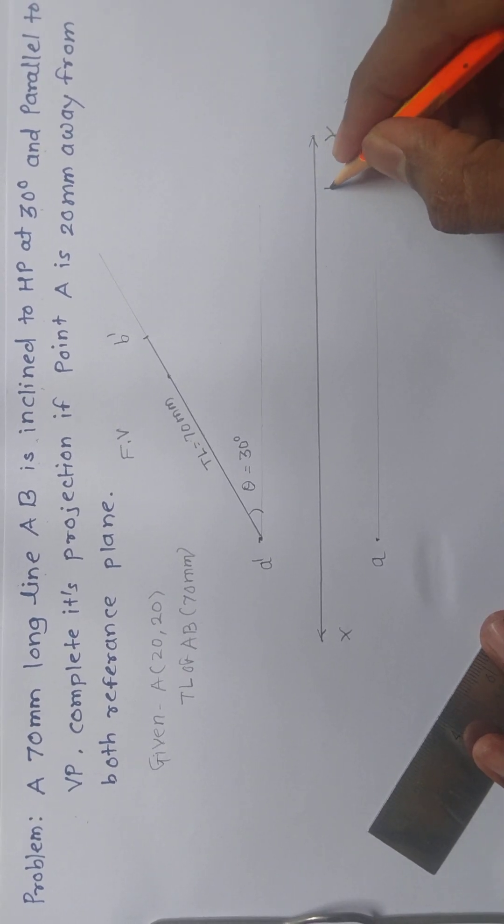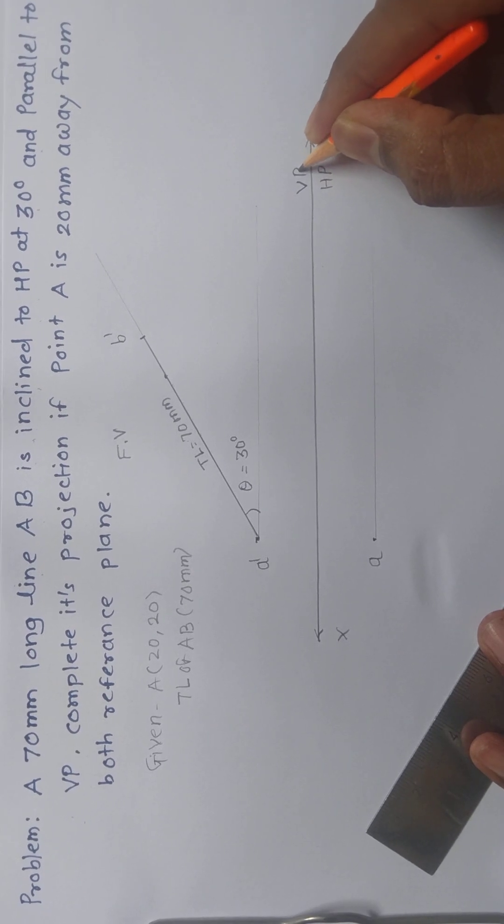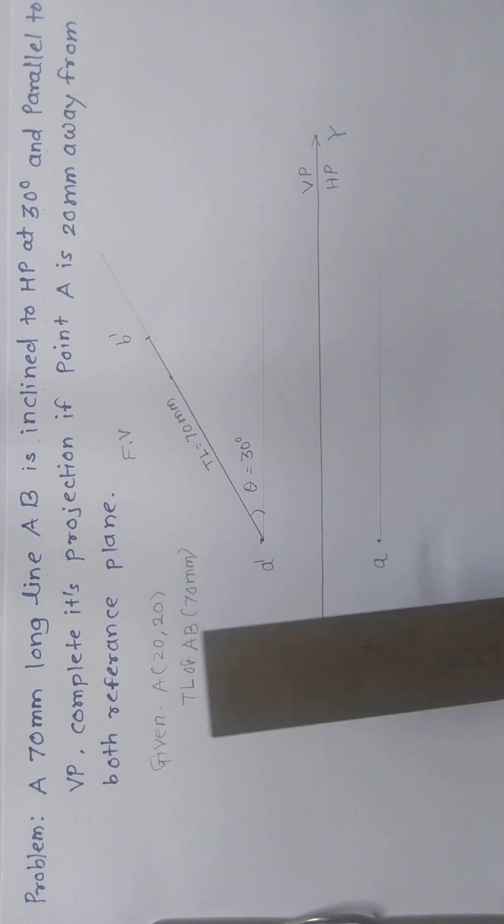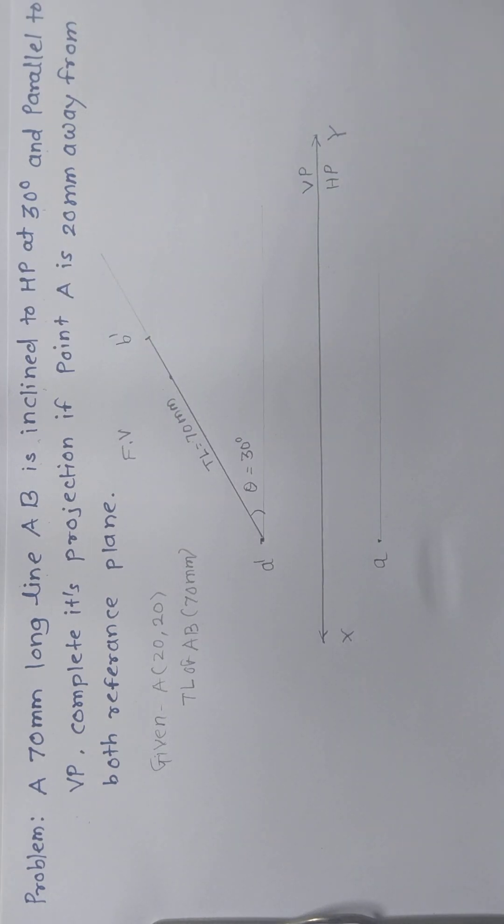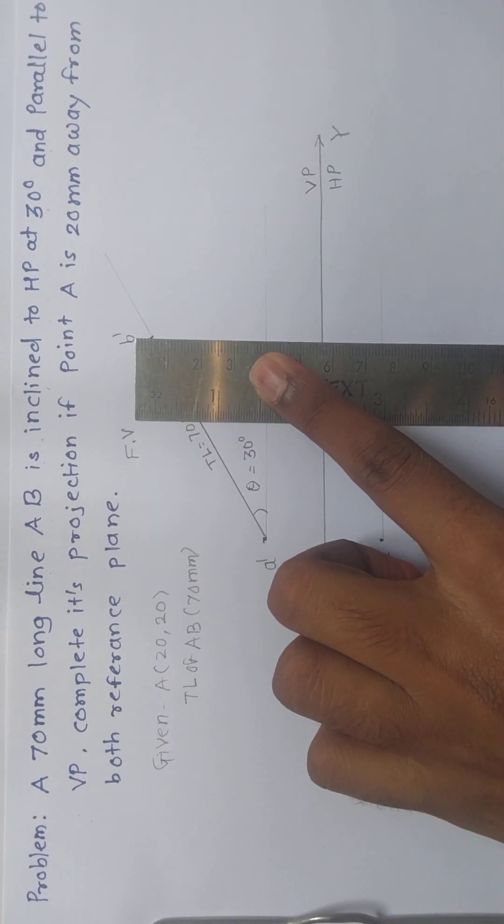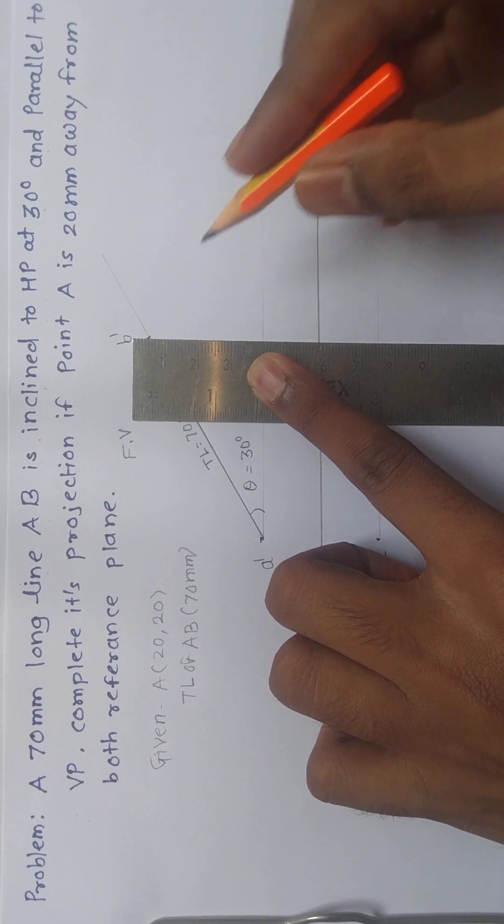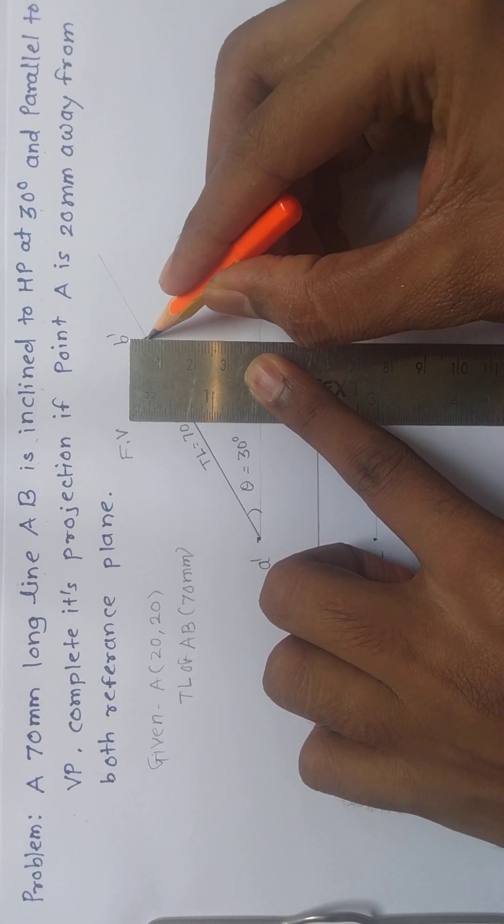This is HP, this is VP. Now we have to take the projection of this line in the top view. Because the line is parallel to VP, both points A and B of this particular line must be at the same location or from the same distance.